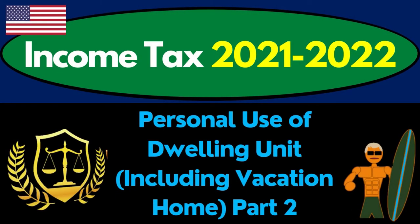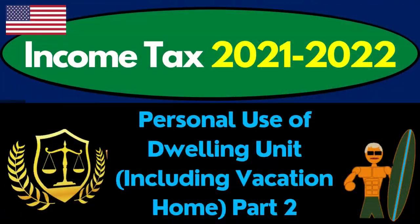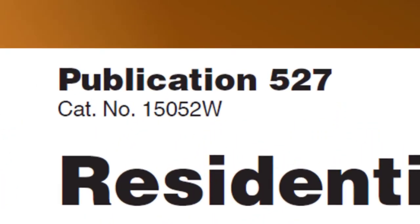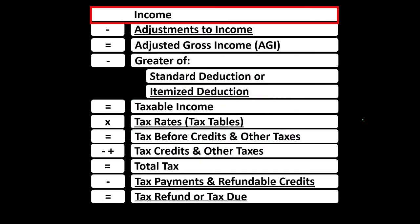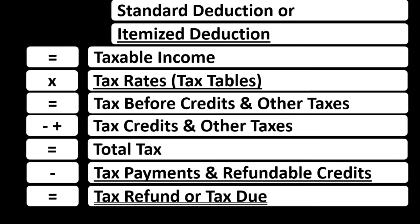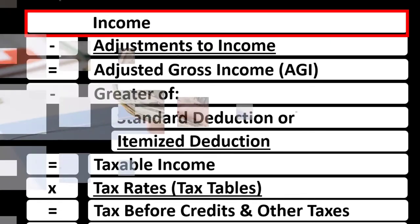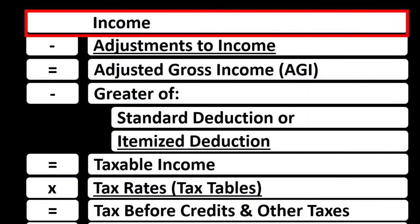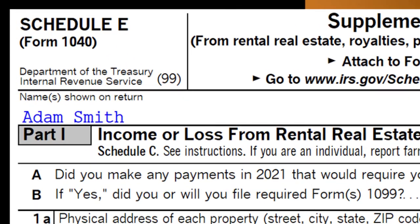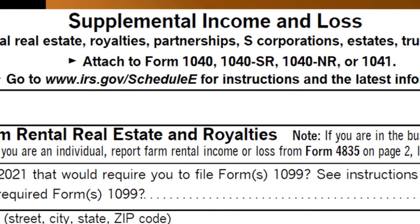Income tax 2021-2022, personal use of dwelling units including vacation home, part two. Most of this information can be found in Publication 527, Residential Rental Property, Tax Year 2021, on the IRS website irs.gov. The income tax formula has line 1 income with a sub-schedule — an income statement with income and expenses. The net rolls into line 1 on Form 1040 via Schedule E, the supplemental income schedule, focusing on rental real estate.